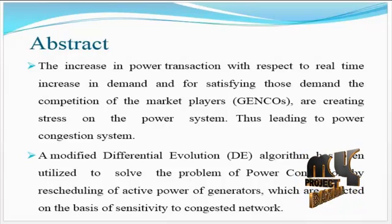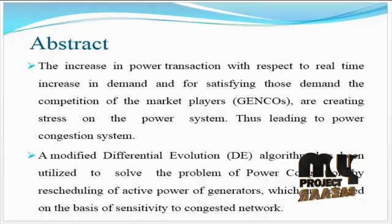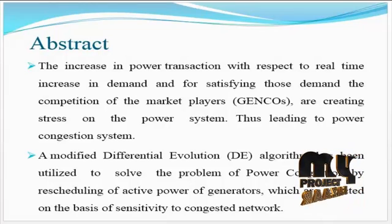Generator rescheduling using a genetic algorithm-based approach is proposed, enabling identification of the minimum cost of rescheduling. The selected bus system for this proposed topology is the IEEE 30 bus system. However, the genetic algorithm does not handle non-differentiable, non-linear, multimodal functions, is not suitable for distributed parallel implementation, and has inconsistent convergence. Therefore, we propose a modified differential evolution algorithm to solve the congestion problem by rescheduling generators based on the sensitivity factor of the power system.